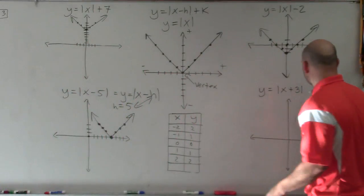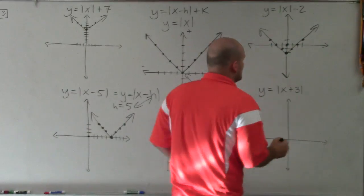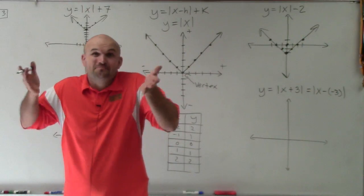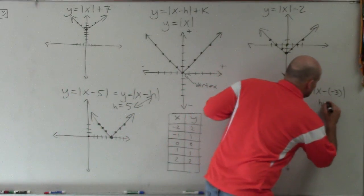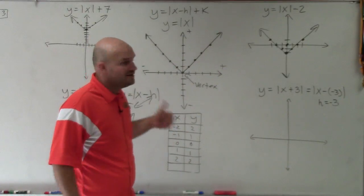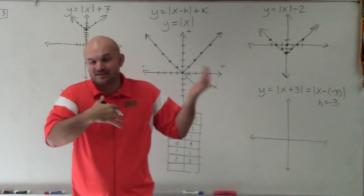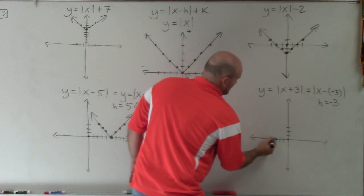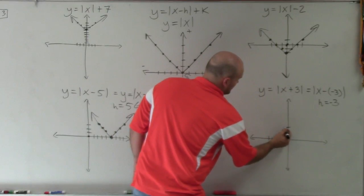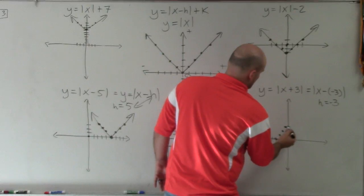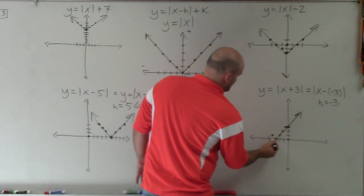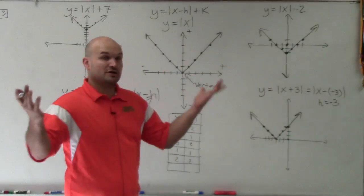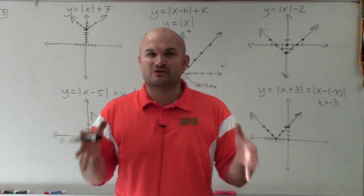In the same case, x plus 3 gets a lot of students. Remember, we could write this as x minus negative 3. So h is equal to negative 3, meaning we're going to be shifting it to the left. Or if you see x plus 3, just know it's inside the absolute value, so it's the opposite — it goes to the left. So instead of my vertex being at 0, it's going to be at negative 3: 1, 2, 3. Then follow the same patterns: over 1, up 1 in both directions. That is how you graph an absolute value function with vertical and horizontal transformations.